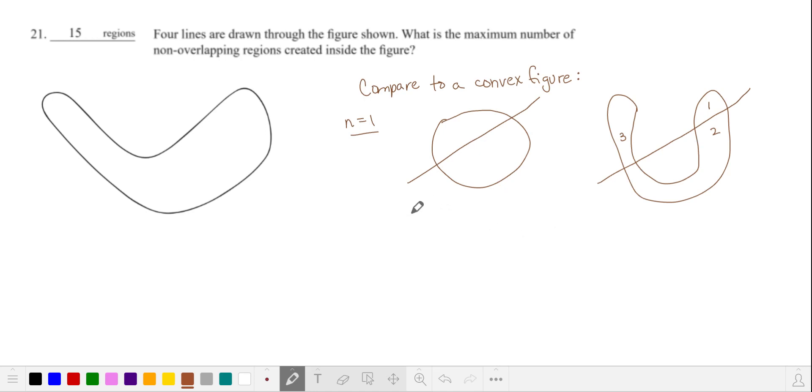In our convex figure, one line divides it into two pieces, and in the given figure in the problem, we have two pieces plus one more additional on the other arm for three pieces.